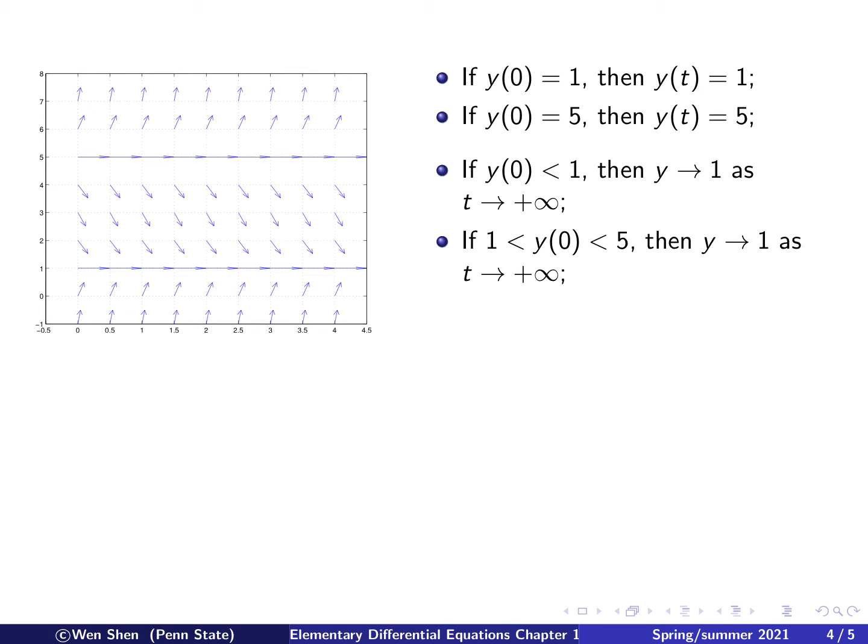Now the fourth case, y initial value is between 1 and 5. So between this horizontal solution and this one, and we see that since the gradient is negative, and we follow the arrow, the solution will decrease, and then the slope will get smaller and smaller, and asymptotically, it will approach 1. So that's what we wrote here.